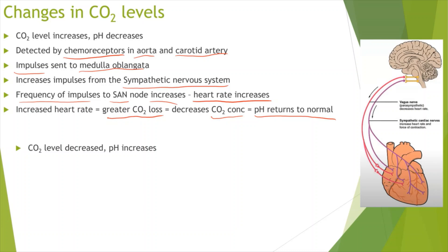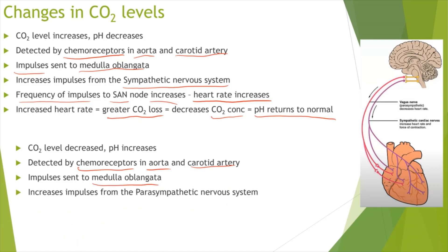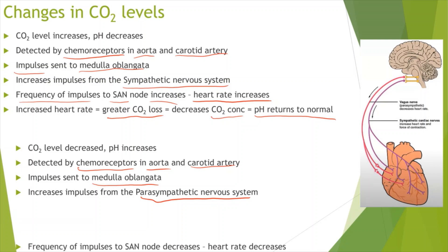On the other hand, if CO2 levels decrease, the pH increases and conditions become slightly more alkaline. This is detected by the chemoreceptors in the aorta and carotid artery, and impulses are sent to the medulla oblongata. There will be an increase in impulses from the parasympathetic nervous system, because we want to decrease the heart rate.